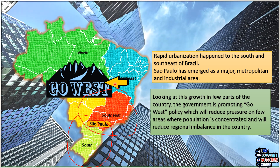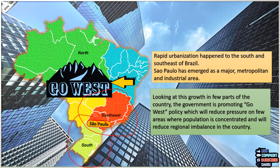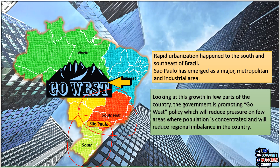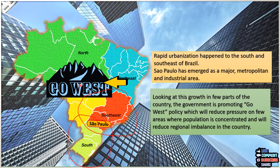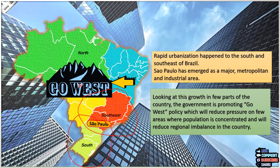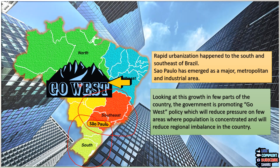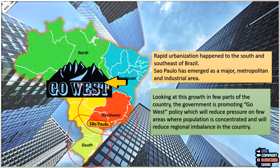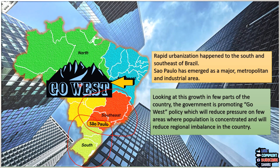The population is more concentrated in the coastal parts of Brazil, so the government wants to shift population to the west. Most people are not settled in the west because the climate is unfavorable — there are equatorial forests, swampy lands, and an unhealthy climate — which is why people have moved to the eastern coast rather than settling in the west. But the government is promoting the 'Go West' policy to address this imbalance.